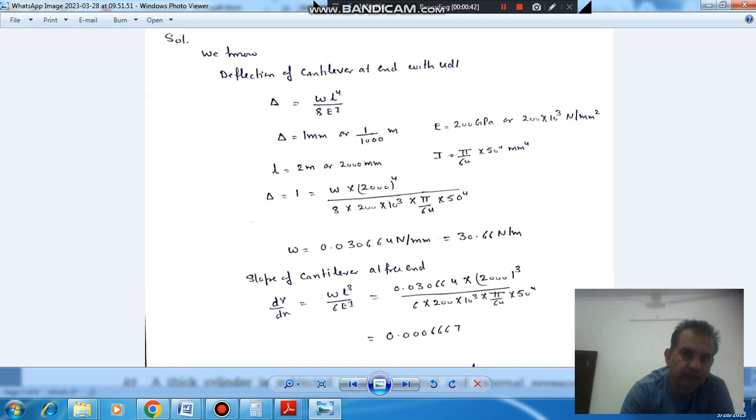So, here we know that the deflection of cantilever at end with UDL is WL to the fourth by 8EI, where L is length and W is being populated in Newton per mm or per meter. The deflection is given as 1 mm and E is 200 GPa. So we are taking all the things in mm. The deflection I have taken in mm, so this is 1 mm. And E is 200 GPa, so it is 200,000 Newton per mm square. And L is 2 meters, so it is 2,000 mm.